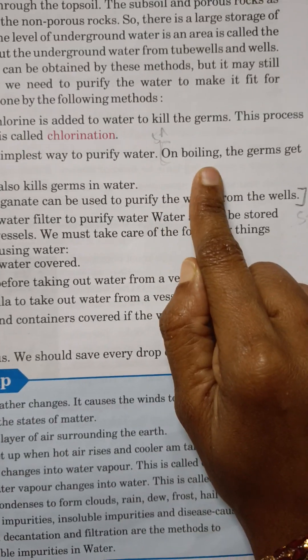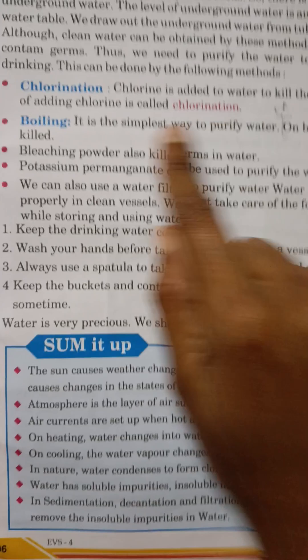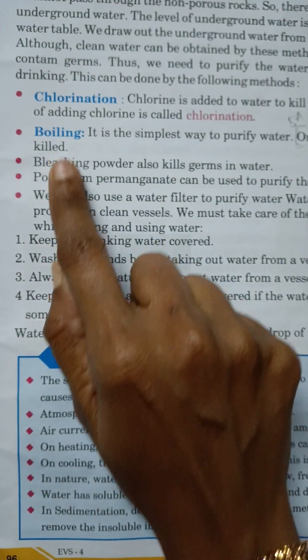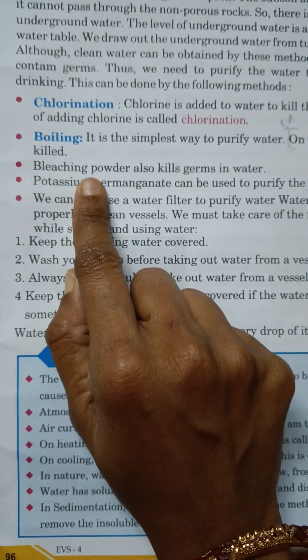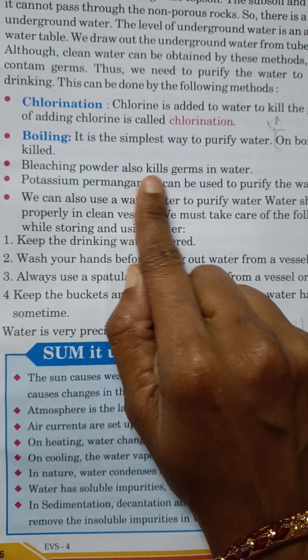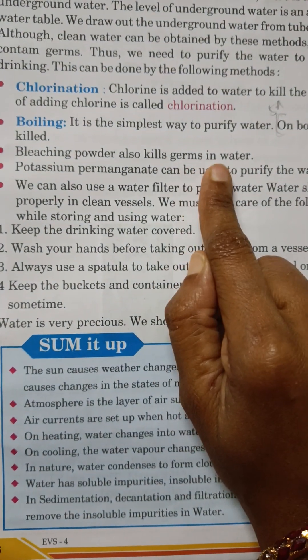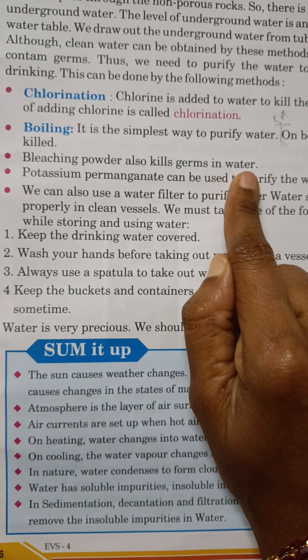On boiling, the germs get killed. Bleaching powder also kills germs in water.